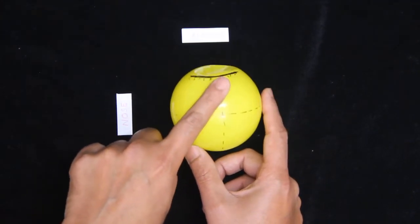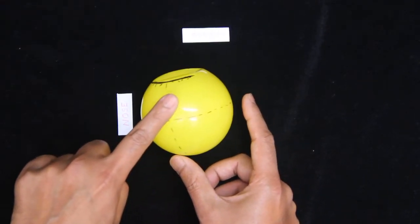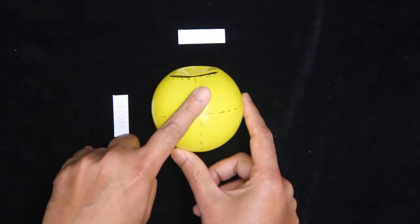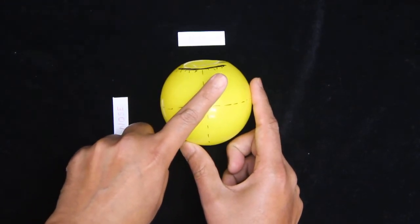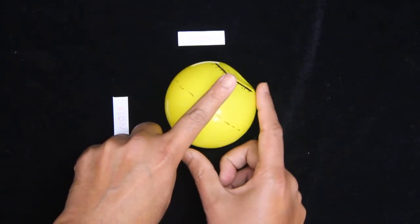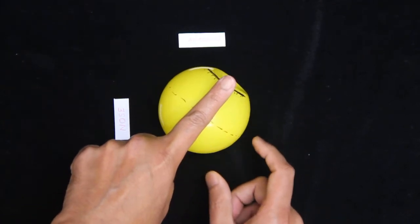So he can only adduct, or he can rotate the eyeball inside. This is called intorsion. But to elevate the eyeball, the eyeball should first turn so that the axis of the eyeball and the axis of the muscle are in the same line.